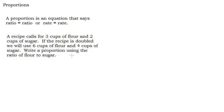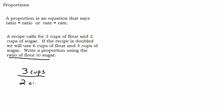Let's look at this first example. A recipe calls for three cups of flour and two cups of sugar. If the recipe is doubled, we will use six cups of flour and four cups of sugar. Write a proportion using the ratio of flour to sugar. With a proportion, a ratio equals a ratio. The first recipe gives us three cups of flour over two cups of sugar, and the doubled recipe gives us six cups of flour over four cups of sugar. A proportion says these two things are equal, and you can see those two fractions are definitely equal to each other.